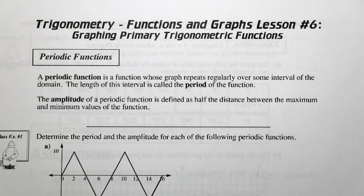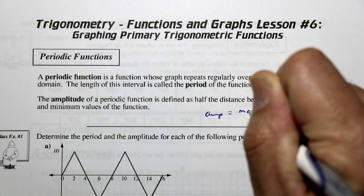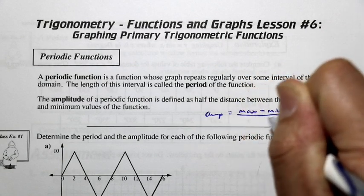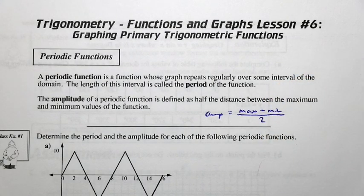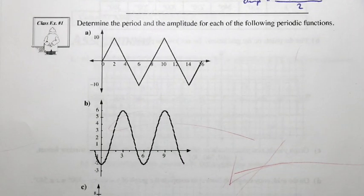The amplitude of a periodic function is defined as half the distance between the maximum and minimum values of the function. We can get this amplitude by finding the maximum y value, minus the minimum y value, and then dividing by 2. Let's take a look at class example 1 and determine the period and amplitude for each of the following periodic functions.